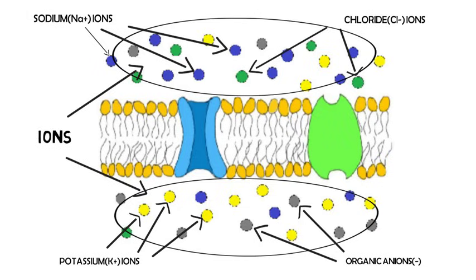At rest, the inside of the neuron is more negatively charged than the outside, causing the resting membrane potential of an average neuron to be around negative 70 millivolts.